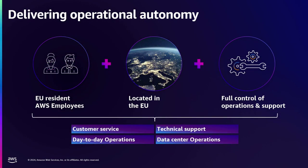The next characteristic is operational autonomy, stemming primarily from questions around what happens in a geopolitical crisis or natural disaster. Our commercial regions are supported by globally distributed engineering teams. For European Sovereign Cloud, the operations will be done by EU residents who are physically present in the EU — and the scope extends to not just customer service, but also day-to-day operations, data center operations, and technical support. This provides customers additional assurances over operational autonomy.